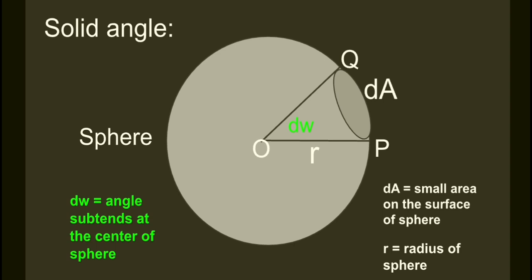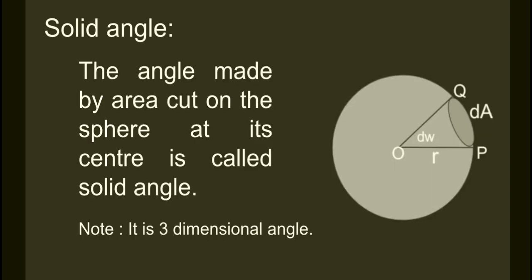So we can define solid angle as the angle made by area cut on the sphere at its center. The angle made by the area cut on the sphere, that is dA, makes an angle at the center dω.